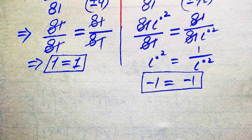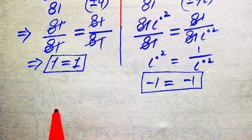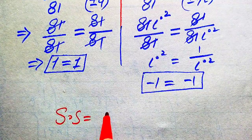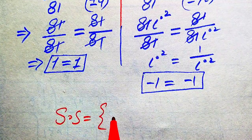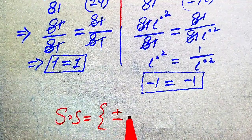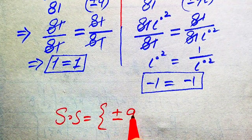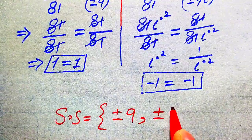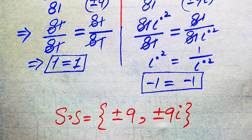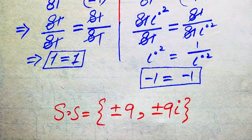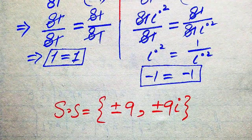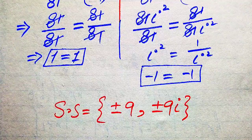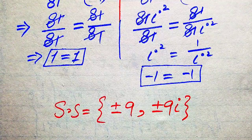All four roots of the given equation are satisfied. Finally, the solution set of the given equation is plus or minus 9 and plus or minus 9i. Thank you so much for watching this video, please subscribe to my channel for more exciting videos.